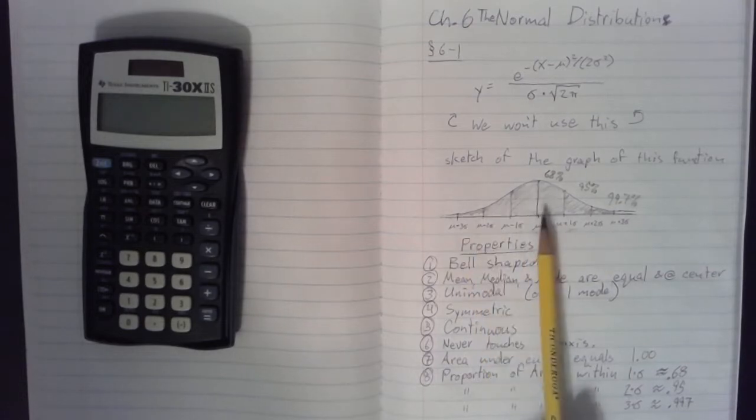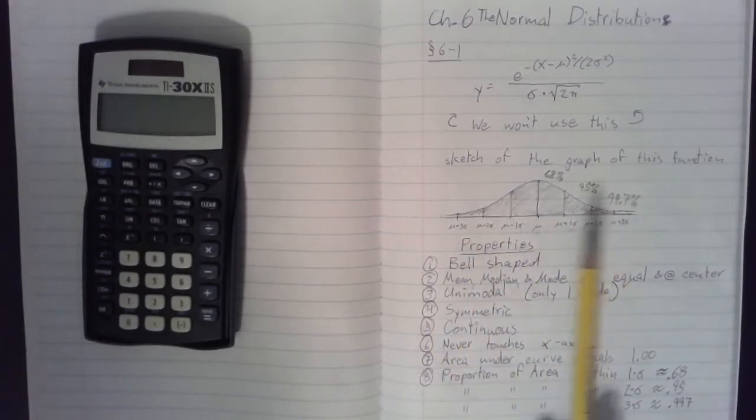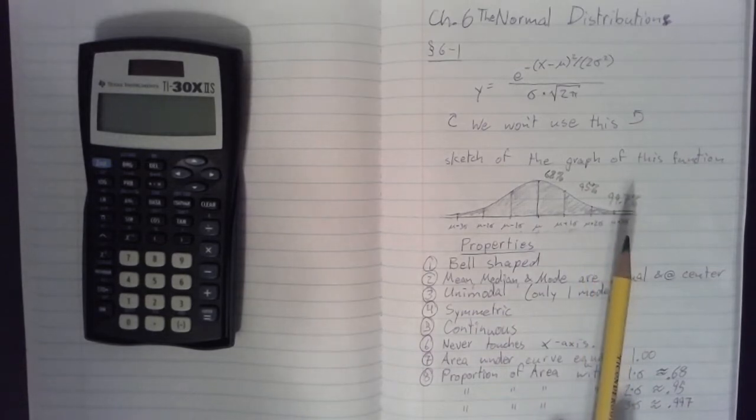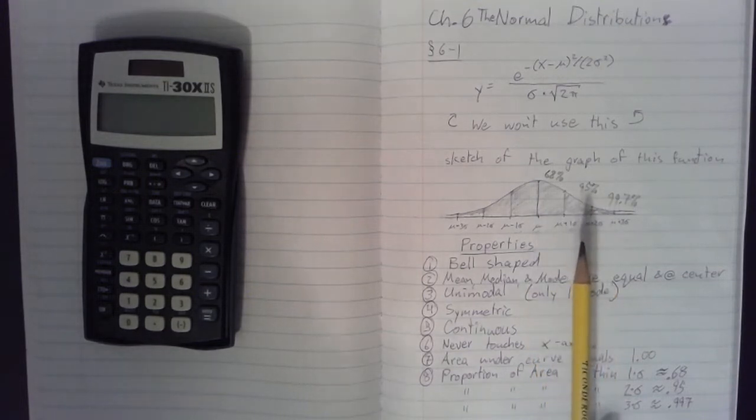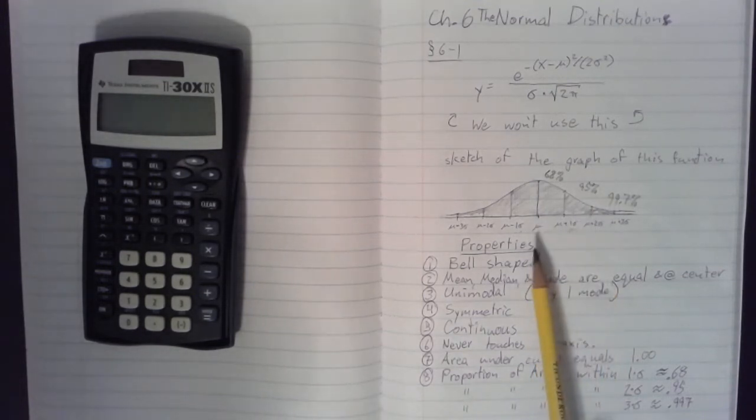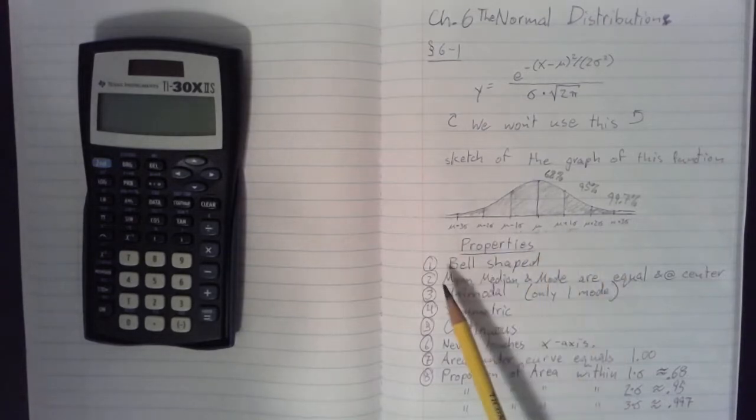So, that means that the left half and the right half of the graph look identical to one another. We are going to be using this feature or this property of the Normal Distribution curve quite frequently. So, remember that the left half and the right half are identical.